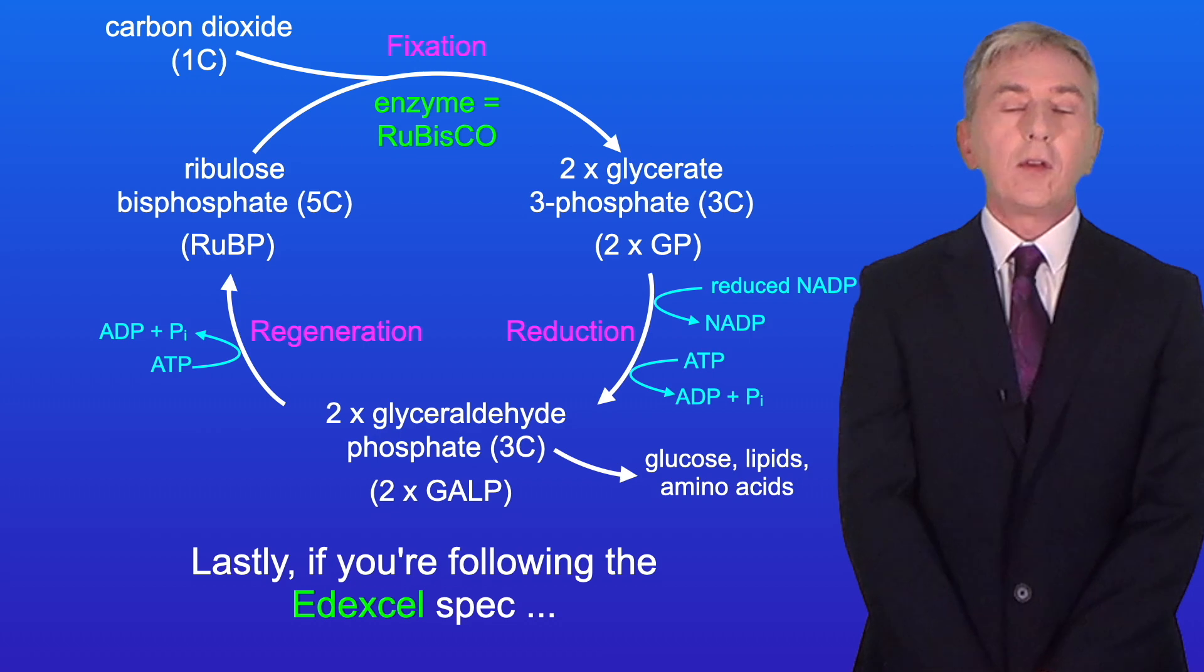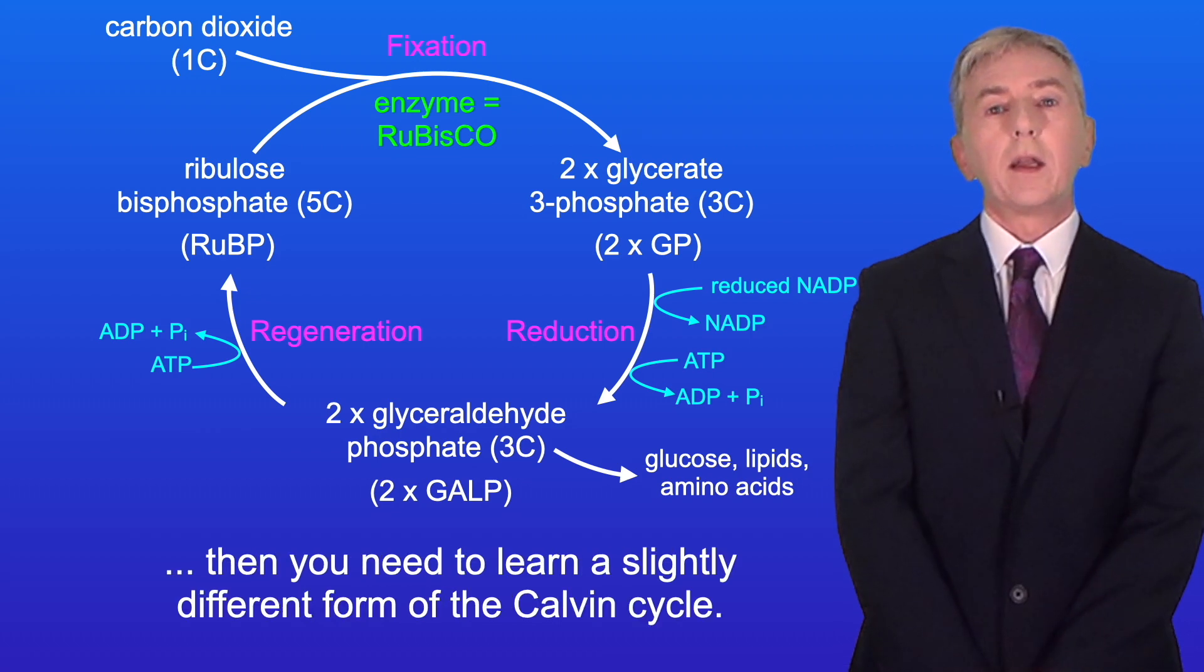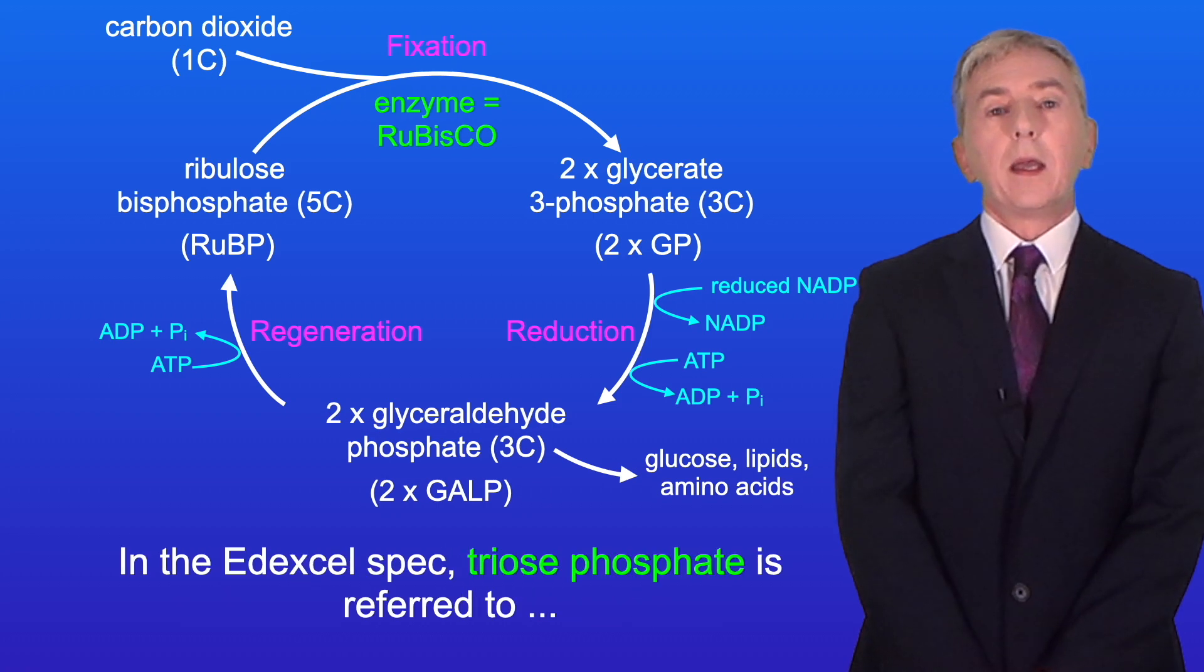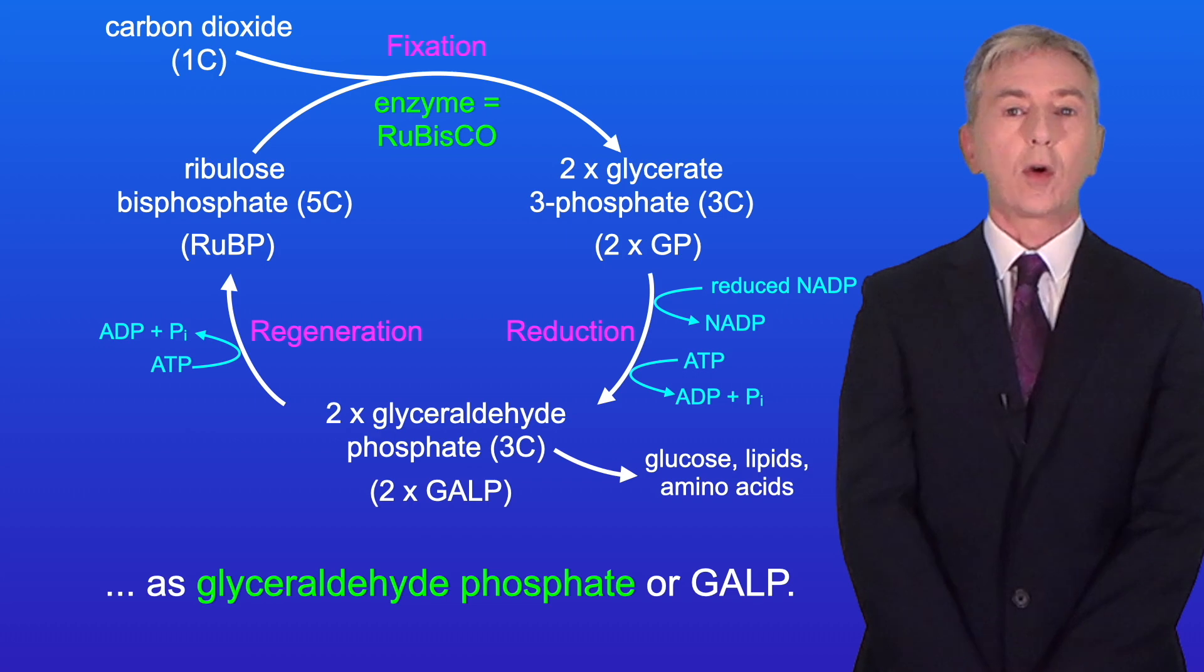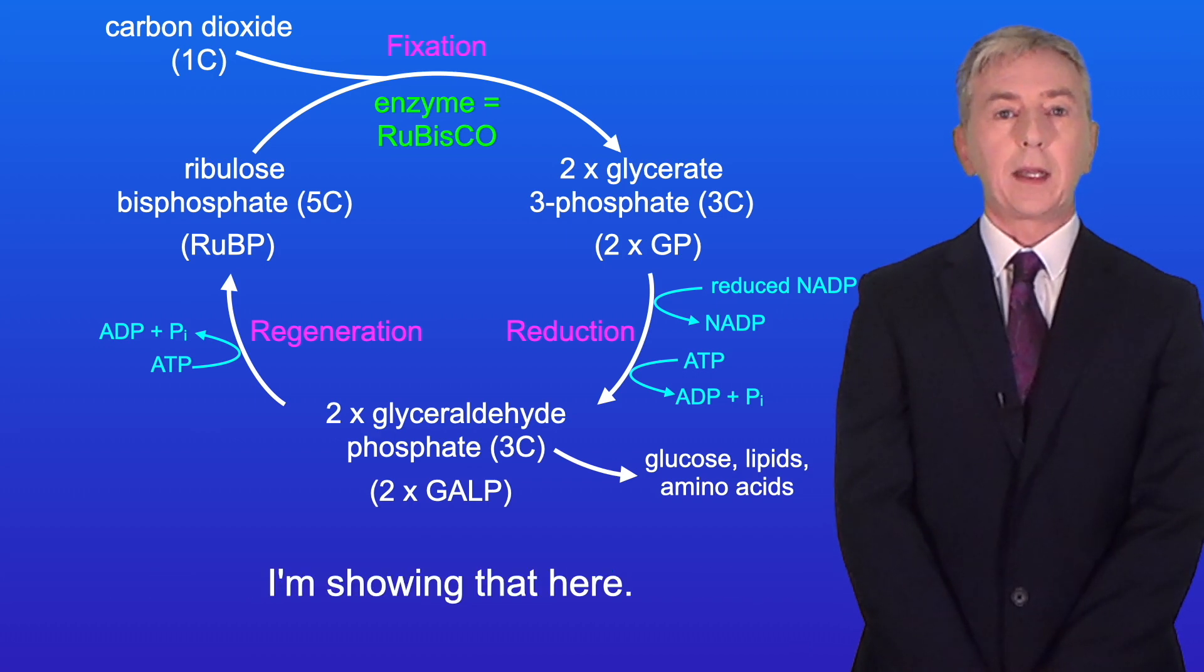And lastly, if you're following the Edexcel specification, then you need to learn a slightly different form of the Calvin cycle. In the Edexcel specification, triose phosphate is referred to as glyceraldehyde phosphate, or GALP, and I'm showing that here.